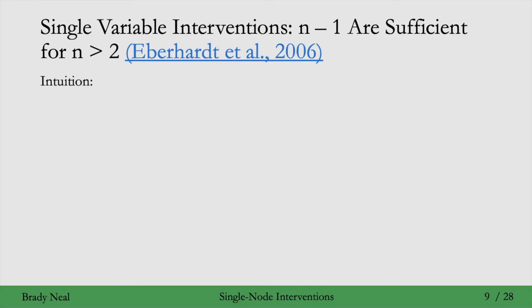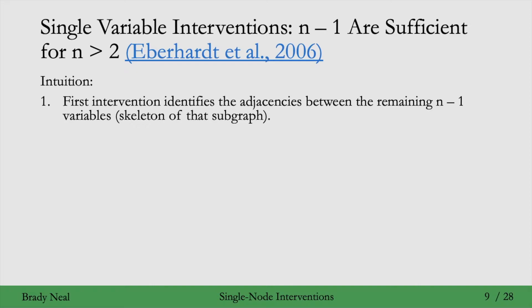We'll now go through the intuition for why n minus 1 variables are sufficient to identify the causal graph when n is greater than 2, using single variable interventions. The first intervention can identify the adjacencies between the remaining n minus 1 variables. You intervene on the first variable, then use an algorithm like PC to discover the Markov equivalence class, which gives you the skeleton of that subgraph — meaning you know which variables are adjacent among all remaining n minus 1 variables.